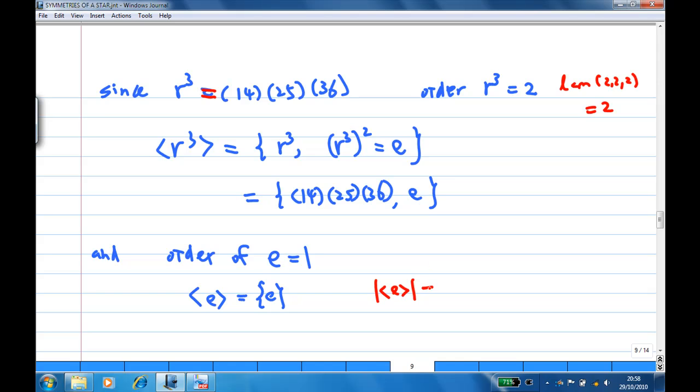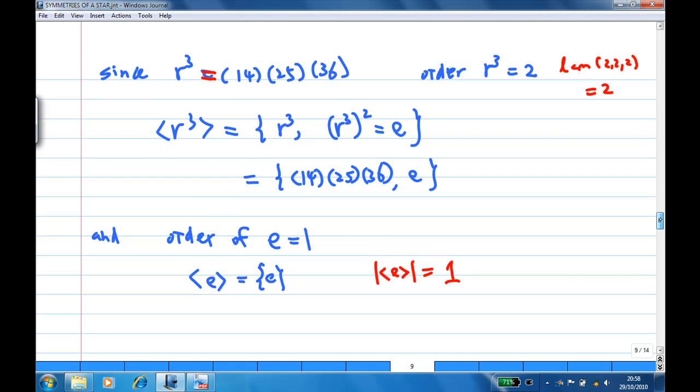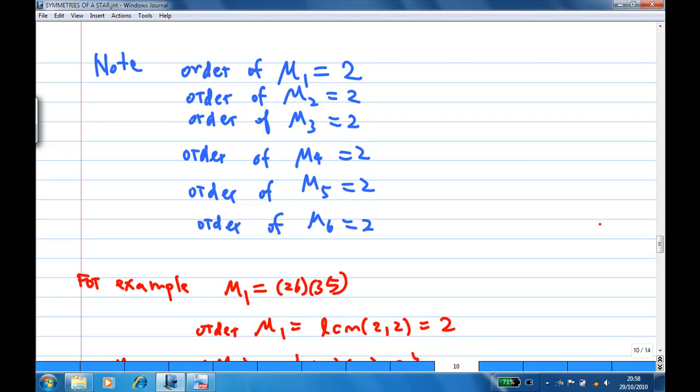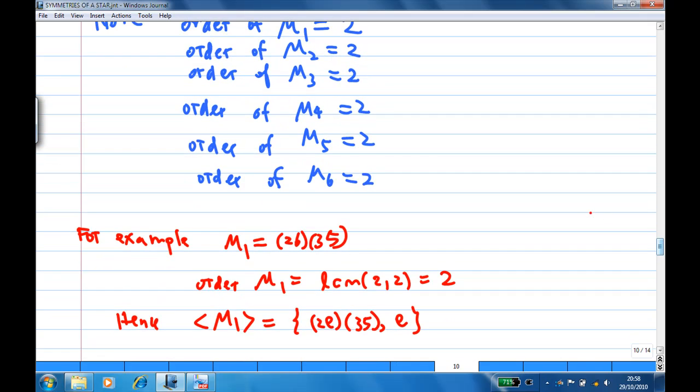Now, how about reflections? For all the reflections, the order of each reflection is 2. For example, μ1 is (26)(35). The order of μ1 will be LCM(2,2) which is 2. So, the subgroup generated by μ has 2 elements, and the order of the subgroup generated by μ1 is 2.